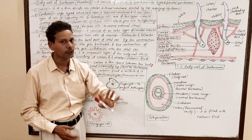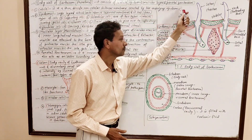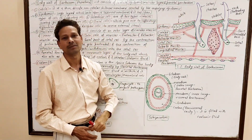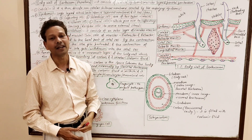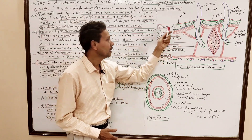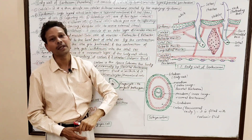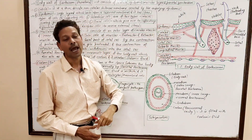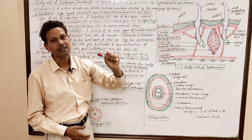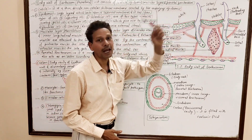The body wall of earthworm has four components. Its first and outermost part is cuticle. It is a thin, delicate layer which is non-cellular. This cuticle is secreted by the underlying epithelium — the epidermis — which secretes this chitinous layer called cuticle, which covers the entire body externally.